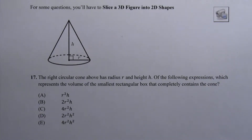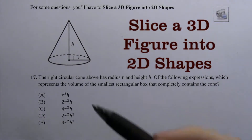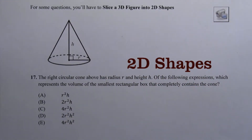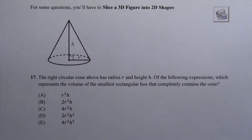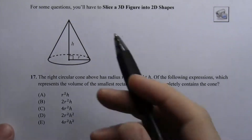Today we're going to talk about how to slice three-dimensional figures into two-dimensional shapes. Shapes like this cone, cylinders, rectangular prisms, spheres — sometimes you need to think of them in terms of the two-dimensional shapes that comprise them. It's going to make visualizing the solution much easier.